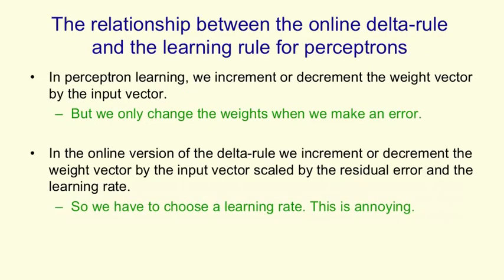There's an interesting relationship between the delta rule and the perceptron learning rule. In the online version of the delta rule, where we change the weights after each training case, it's quite similar to the perceptron learning rule. In perceptron learning, we increment or decrement the weight vector by the input vector, but only change it when we make an error. In the online version of the delta rule, we also increment or decrement the weight vector by the input vector, but we scale it by both the residual error and the learning rate. One annoying thing is we have to choose a learning rate — if it's too big, the system will be unstable; if it's too small, it'll take an unnecessarily long time to learn a sensible set of weights.